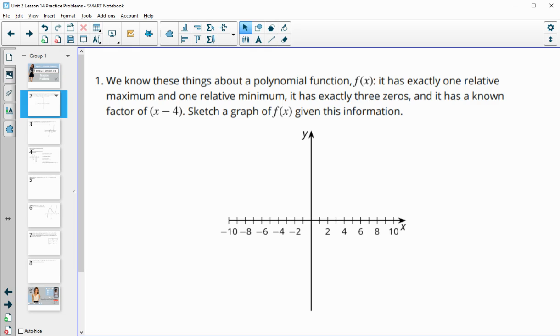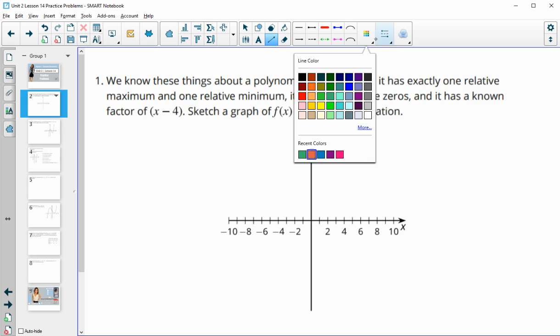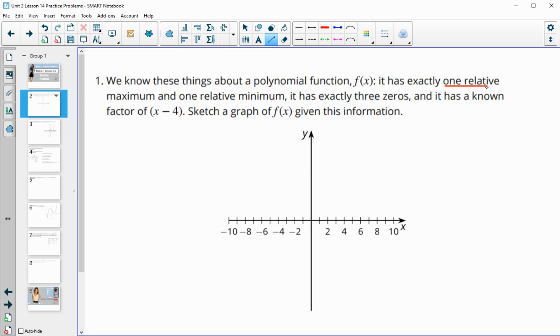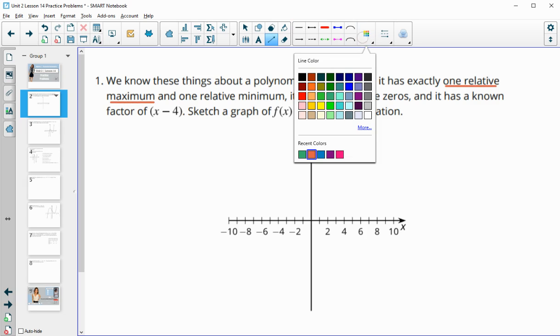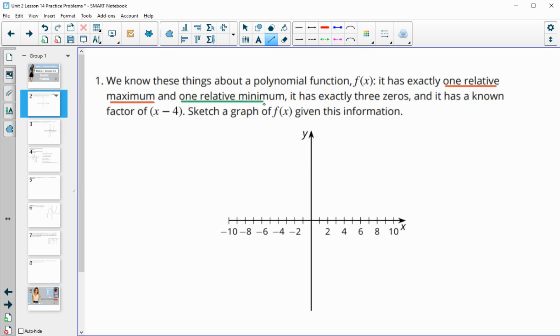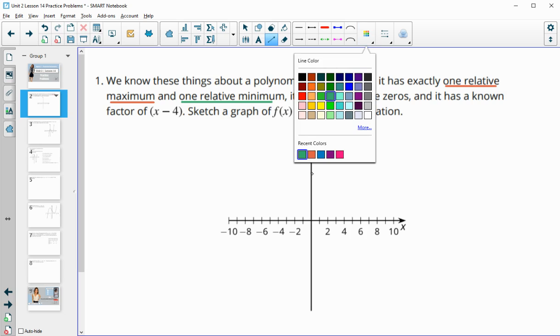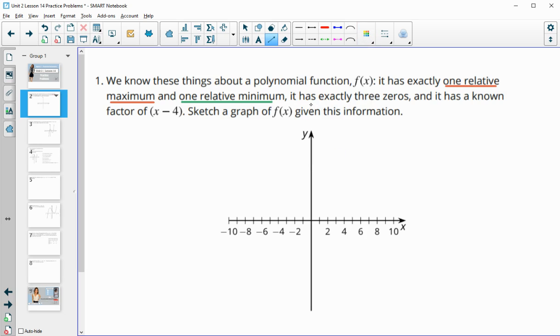Problem one: We know these things about a polynomial function f(x). It has exactly one relative maximum and one relative minimum, it has exactly three zeros, and it has a known factor of x minus 4. Sketch a graph of f(x) given this information.